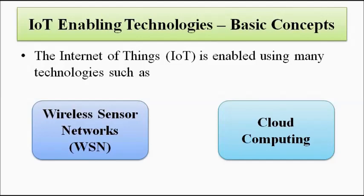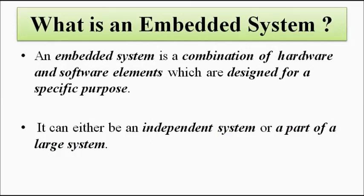Embedded system — what is an embedded system? What is the basic definition of an embedded system? Basically, it is a combination, a group of hardware and software elements — basic hardware devices and software means programs — which is designed to achieve a certain objective, a specific purpose or multiple purposes, multiple objectives. Depending on that, the complexity of the design of the embedded system varies.